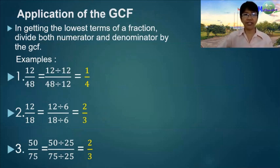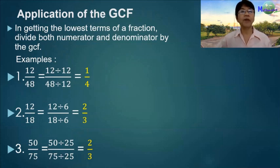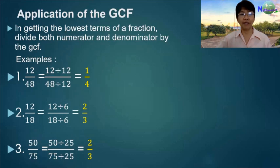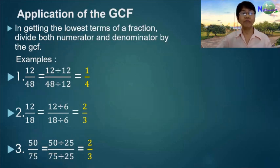Application of the GCF: getting the lowest terms of a fraction — divide both numerator and denominator by the GCF. Example 1: GCF of 12 and 48 is 12, so the lowest term of 12/48 is 1/4. Example 2: divide 12 and 18 by 6 to get the lowest term 2/3. Example 3: divide 50 and 75 by 25 to get the lowest term 2/3.